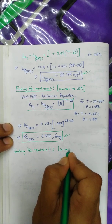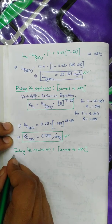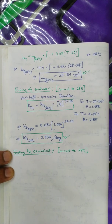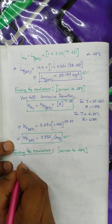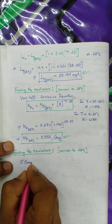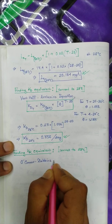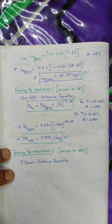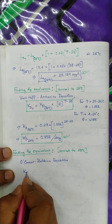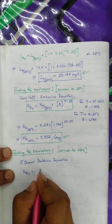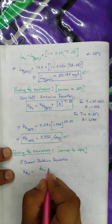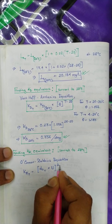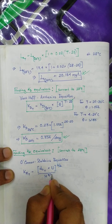Again we need to convert KR to 28 degrees centigrade. This involves quite a few formulas. From the O'Connor-Dobbins equation, we have: KR at temperature T equals the square root of (d₀ · u) divided by h to the power 3/2, where d₀ is the molecular diffusion coefficient, u is the mean current speed, and h is the mean depth.